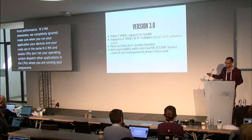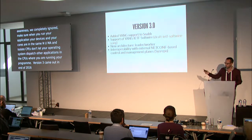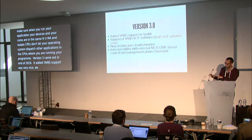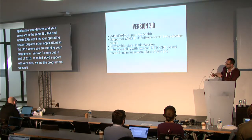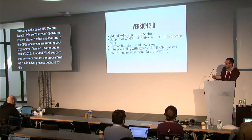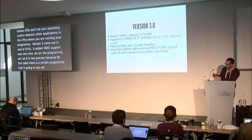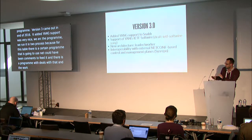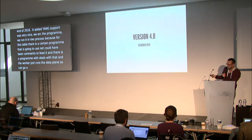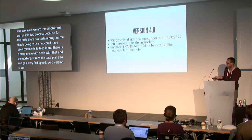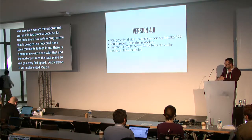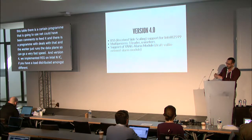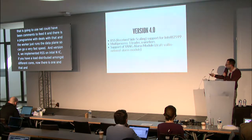Version 3 came out at the end of 2016. It added YANG support — now any Snabb application can use YANG. We re-architected the program to run in two processes: a leader and a worker. For the large binding table, there is a program that uses NETCONF commands to feed it. The leader deals with NETCONF and the worker just runs the data plane so it can run at maximum speed. Version 4 implemented RSS — Receive Side Scaling — on the Intel NIC, which distributes load among different cores for multiprocessing. Now there is one leader and N workers each running the data plane, and we also got YANG alarm model support.